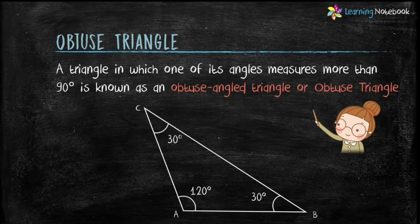Here triangle ABC is an obtuse triangle because one of its angles, that is angle A, measures more than 90 degrees.